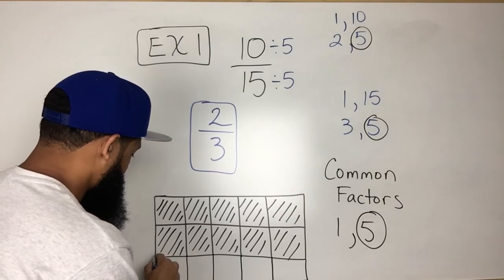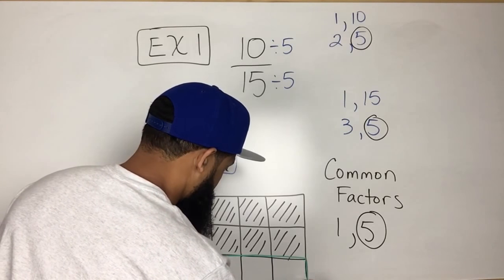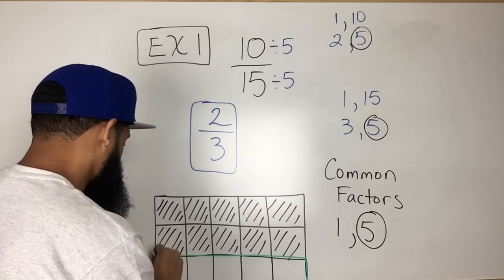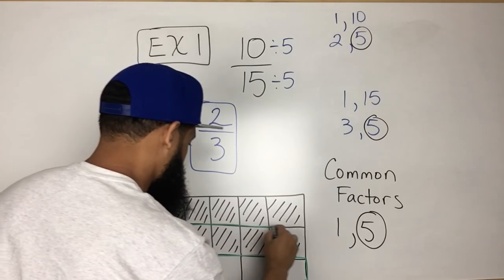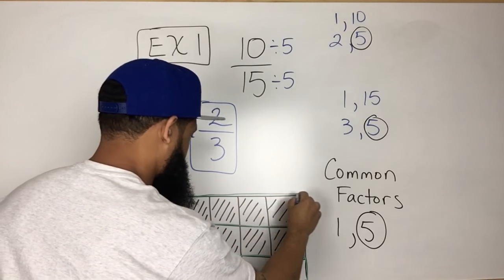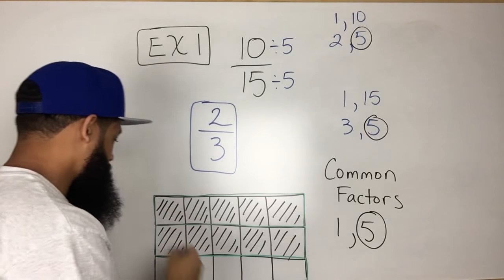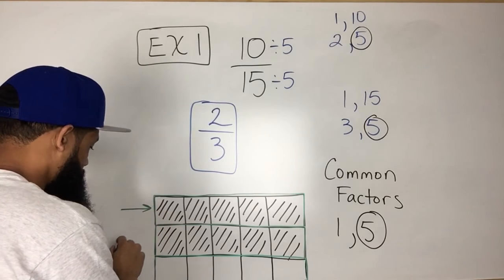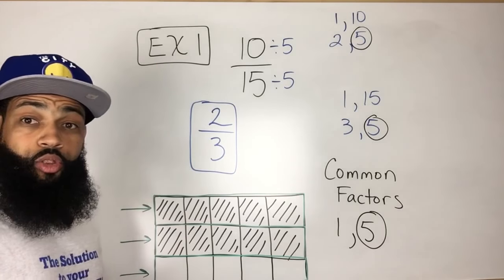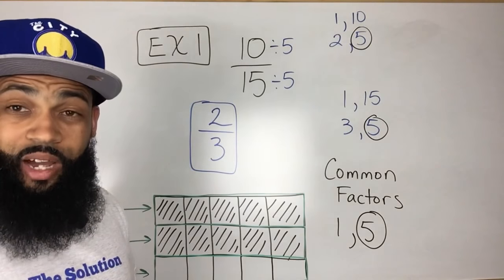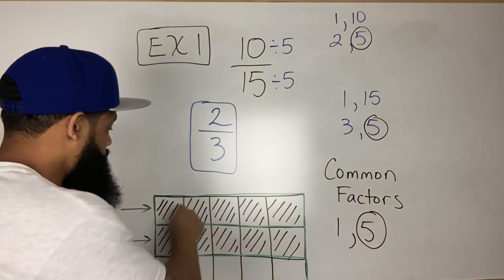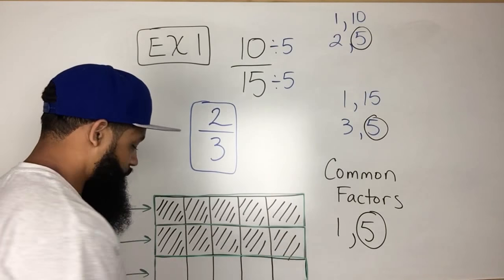So what I would do is I would actually have 1, 2, 3. So I have 1 right there, 1 right there, and 1 right there. So now there's 3 total parts. And if I shade in out of those 3 parts, if I shade in 2 of them, that would be the first row and the second row.